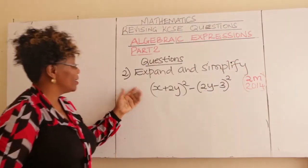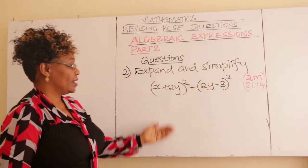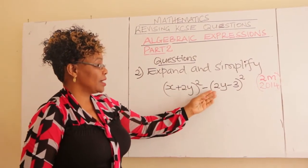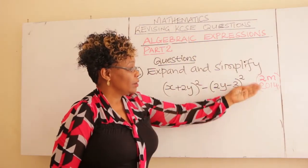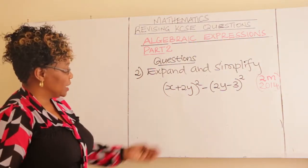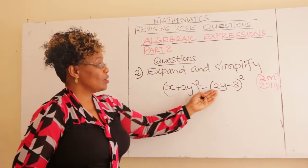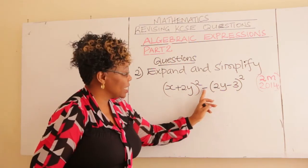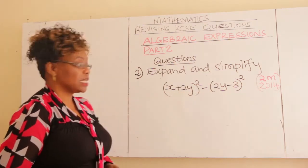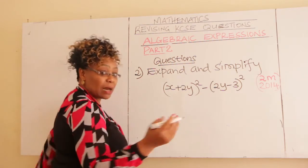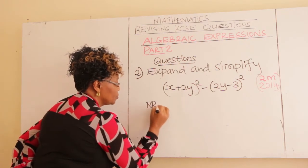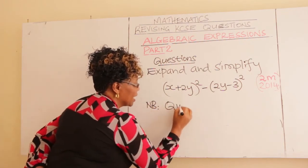Number two, learner. Expand and simplify this expression: (X + 2Y) squared minus (2Y - 3) squared. It was carrying two marks in year 2014. You go about this by expanding the first bracket separately, then expanding the second one separately, and finally subtracting. Before we expand, let us remind ourselves about two quadratic identities that can help you work these out.